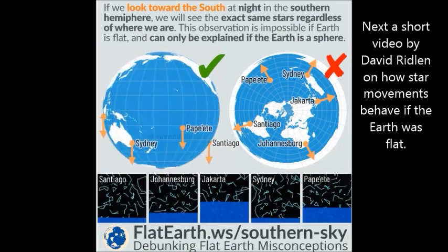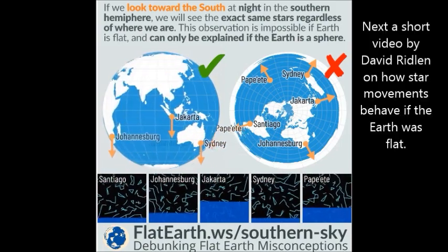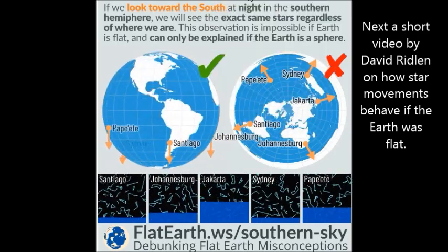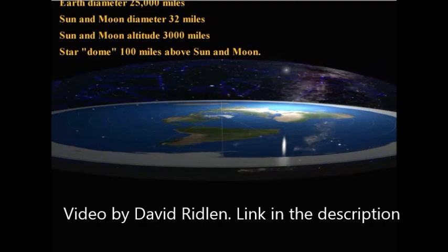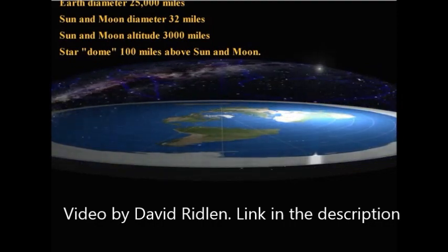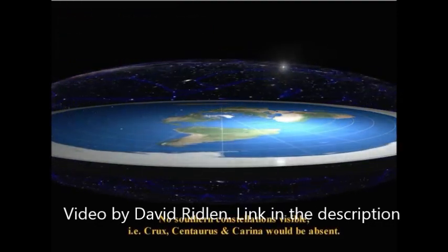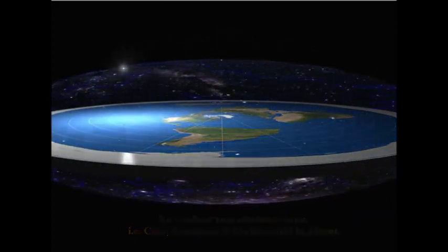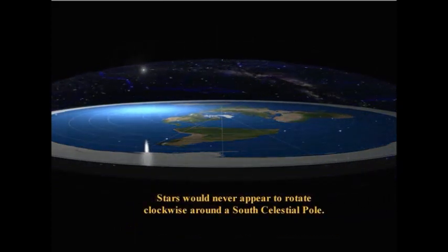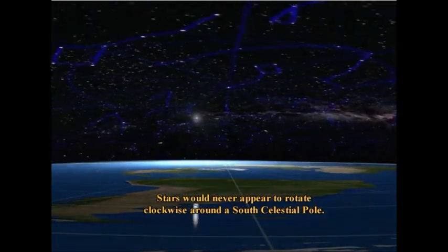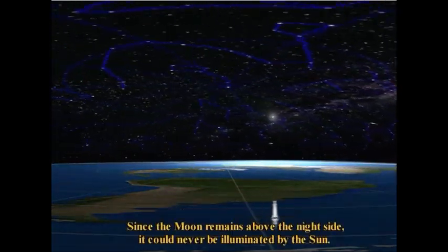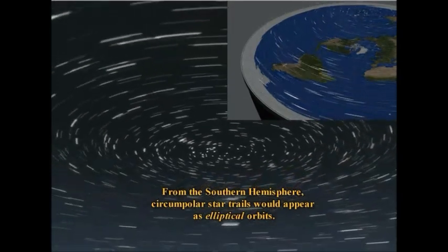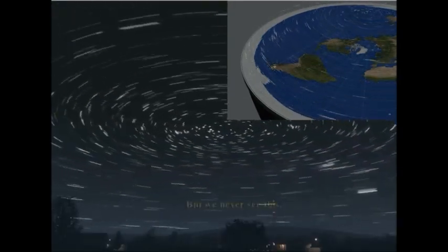Up next is a short animation by David Ridland on how star movements would behave if the Earth was flat. As you can see, certain constellations would not be visible and the stars would not circle clockwise around the south celestial pole. If the Earth was flat, the star trails would take on an elliptical shape the farther away you move from the north pole, but we don't see this in reality.